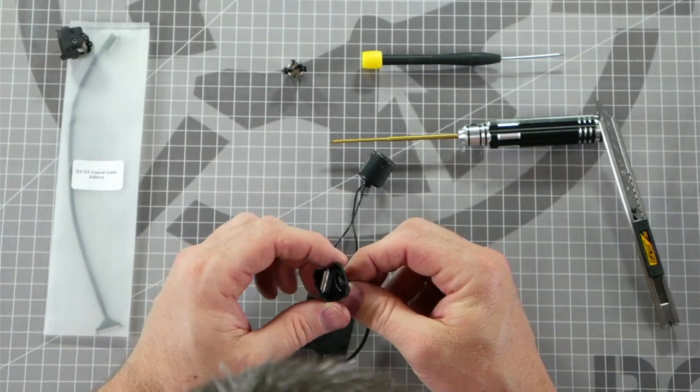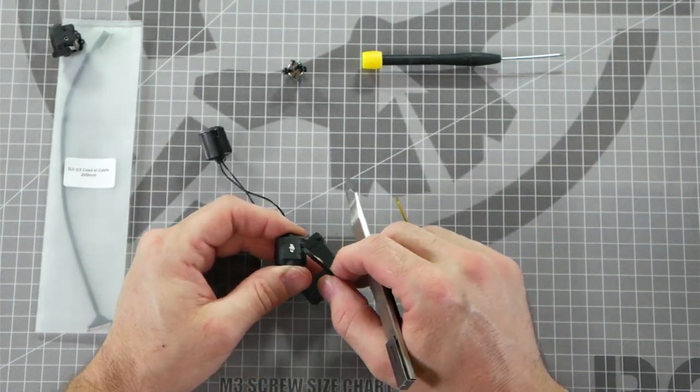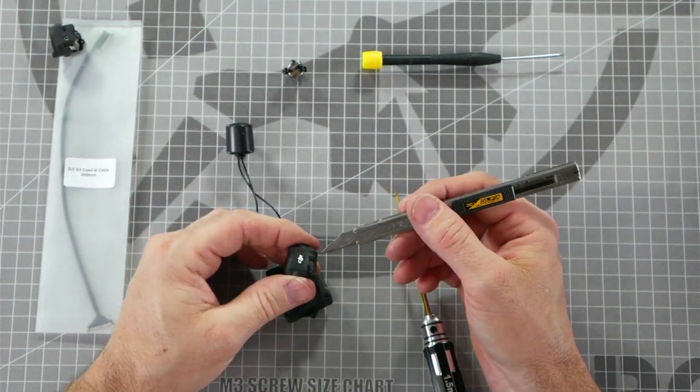Set the camera aside and now we're going to work on getting the camera cable out of the casing. On the back of the camera casing there is a square rubber grommet.